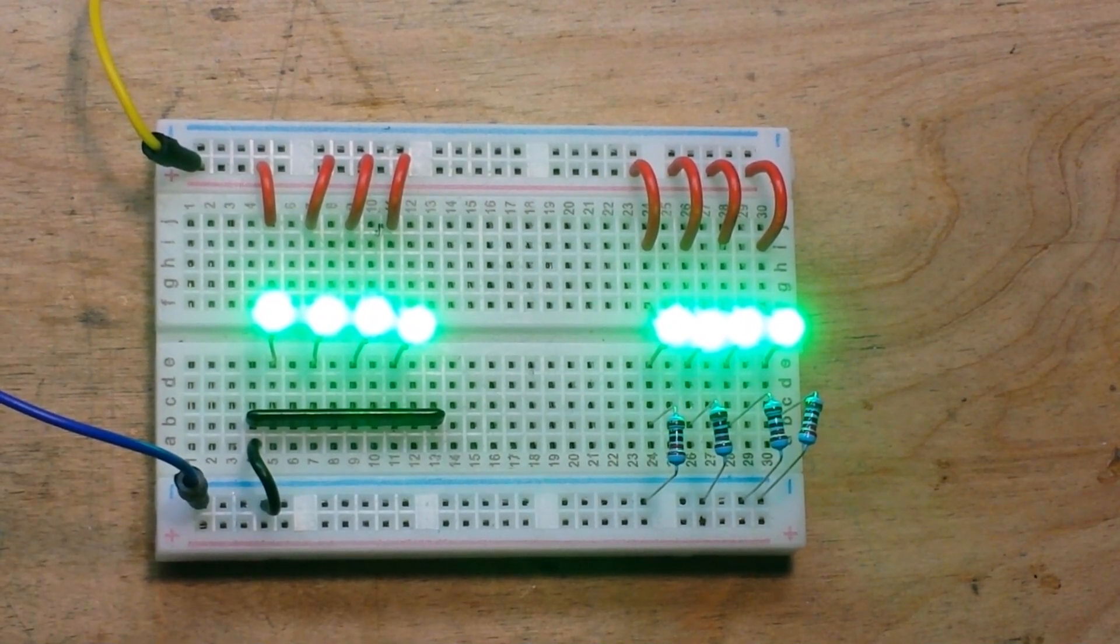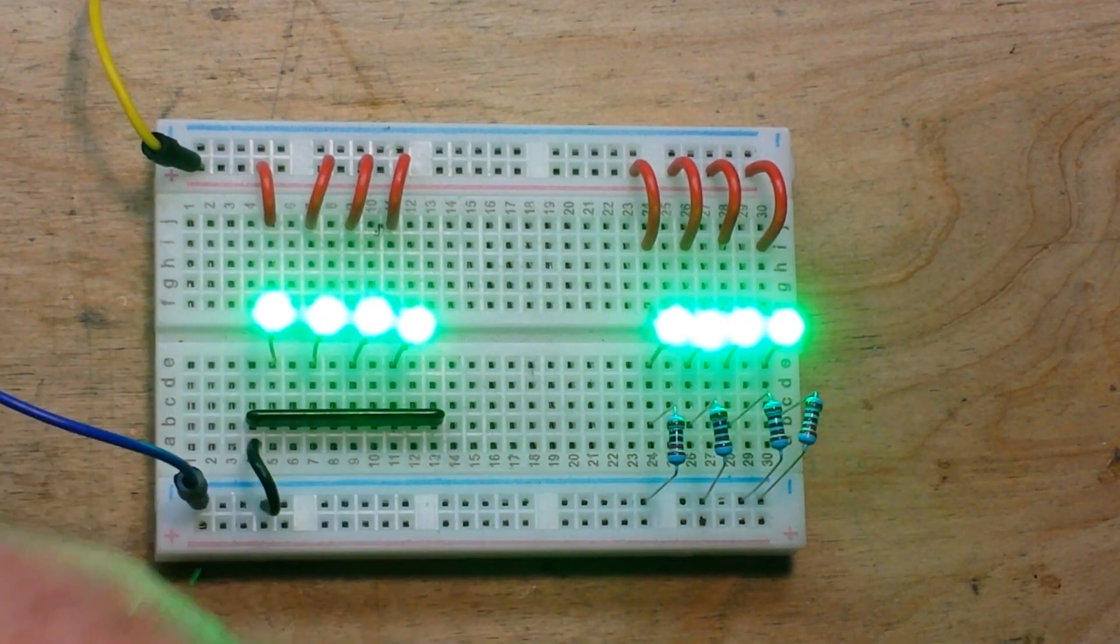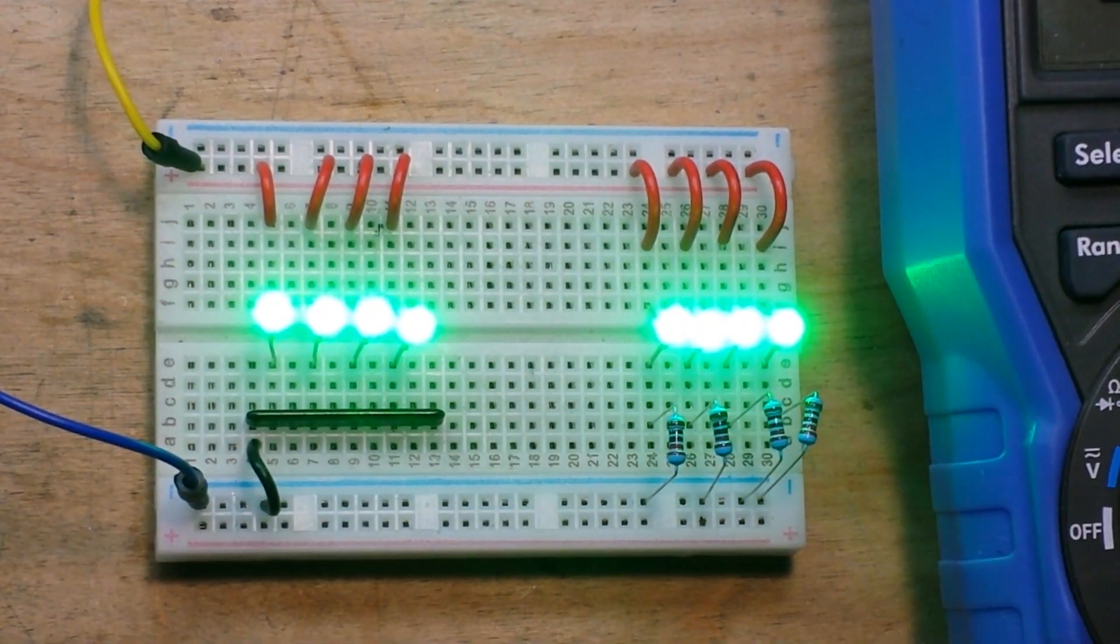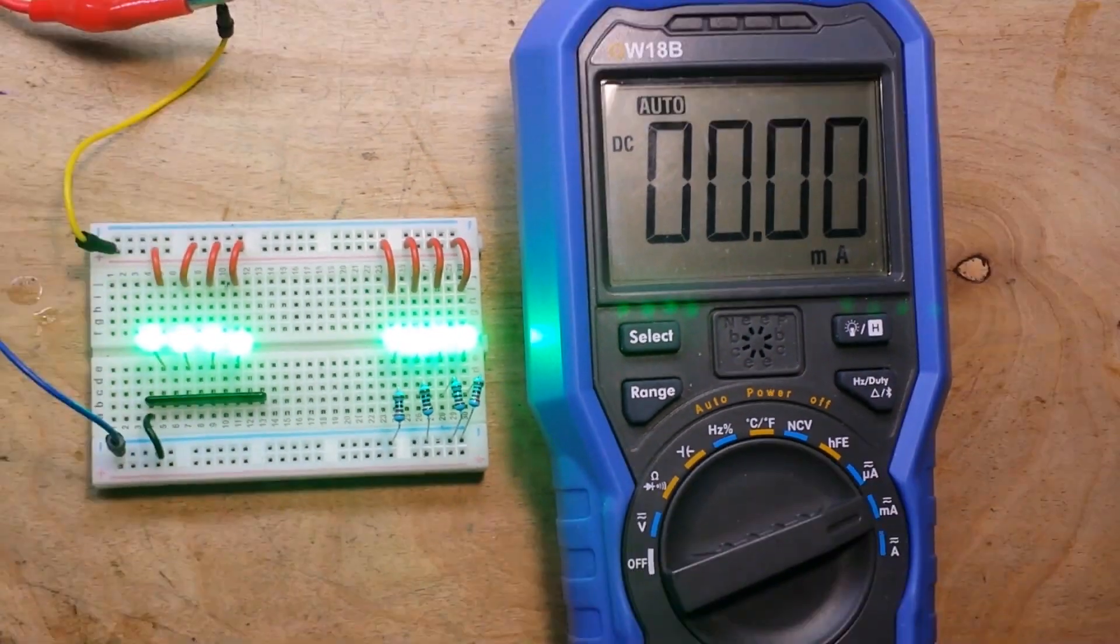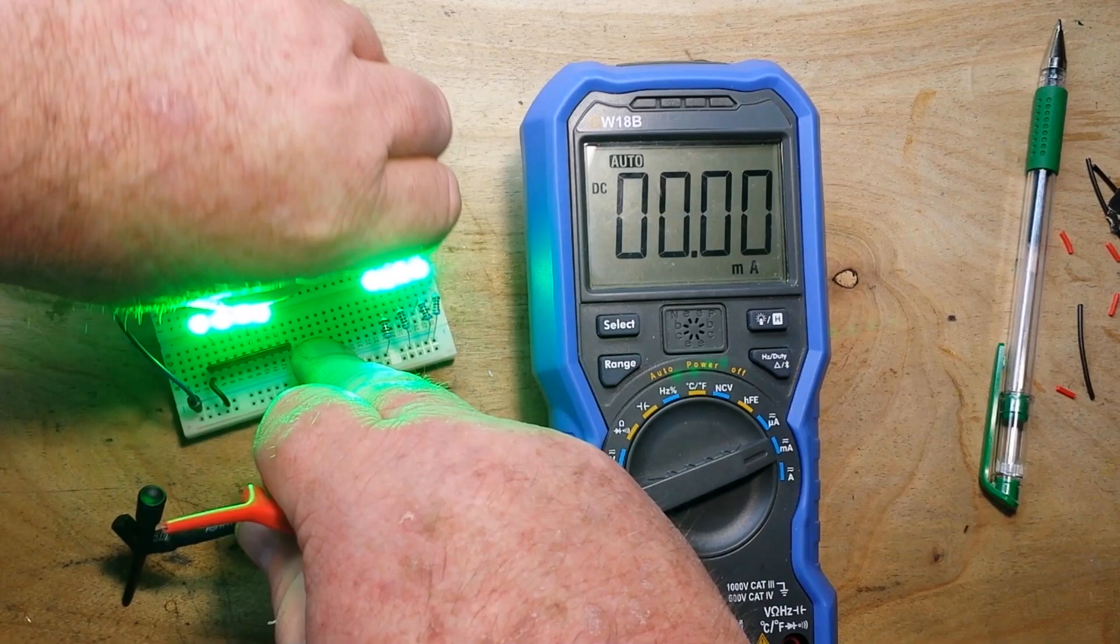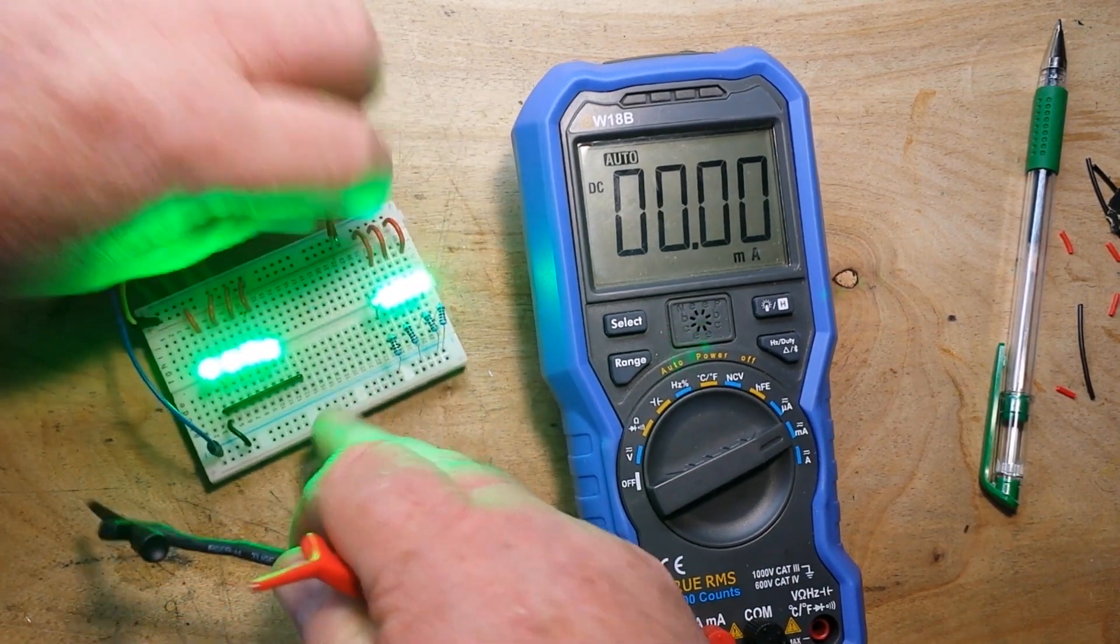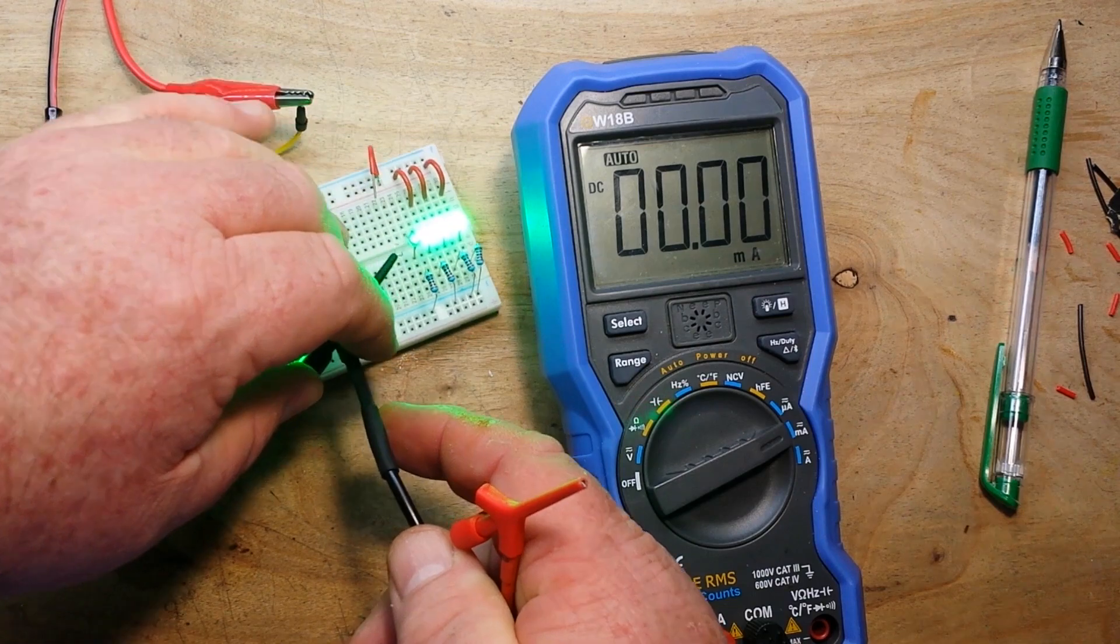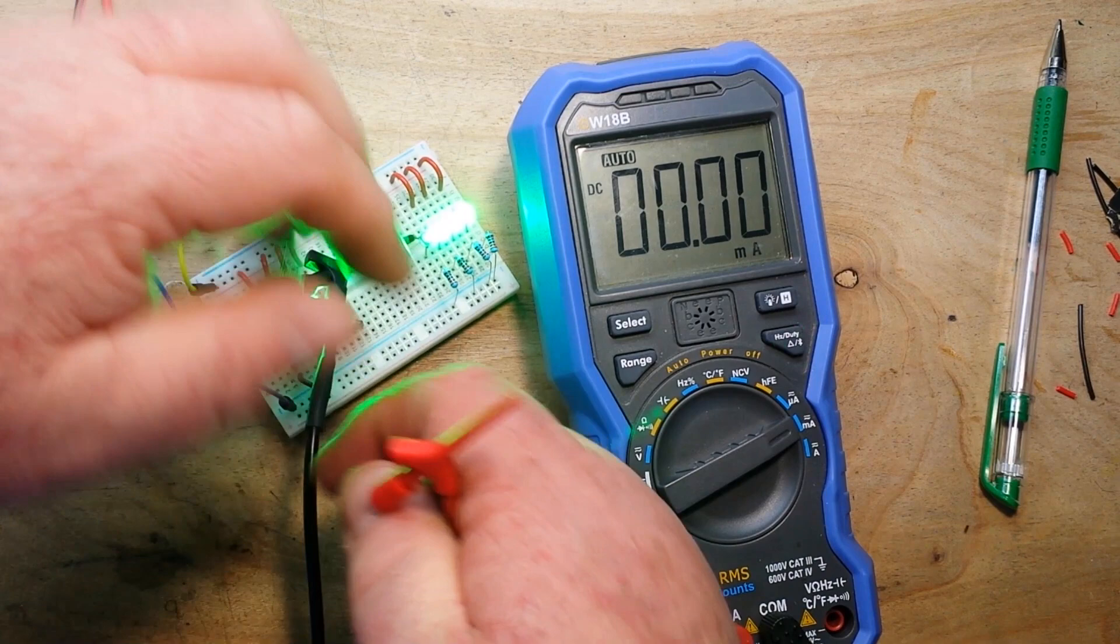And we can go ahead and bring in a meter and put it on the current mode here, bring that over to milliamps. Let me zoom out here a little bit so you guys get a better picture. And what I'll do is I'll pull out one of these leads here and we'll connect our meter up in between. I'm like blinded by these LEDs right now so I'm kind of going by feel here.